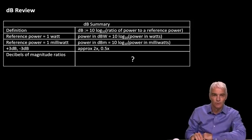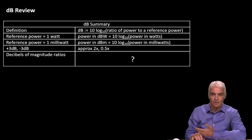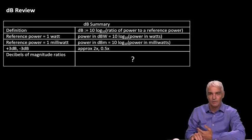So, now we're ready to do our dB review. There's a definition that we've been over twice already. Power in dBW: 10log₁₀ of power in watts. Power in dBm: 10log₁₀ of power in milliwatts. Plus or minus 3 dB is 2x or ½x.